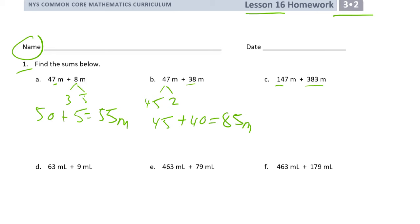We have 147 and 383. So I'm just going to use the standard algorithm. We have a 10 here. 8 and 4 is 12, one more is 13. And then we have 3 and 2 ones and that's 530 meters.